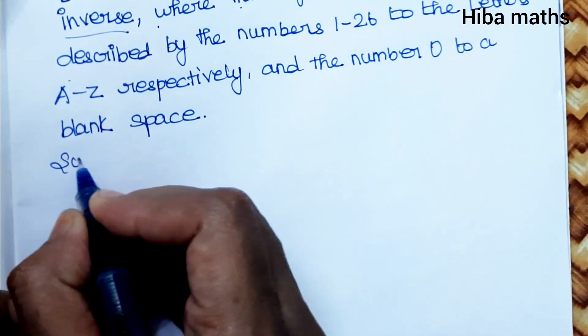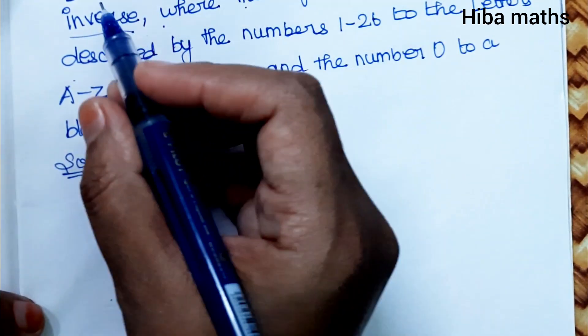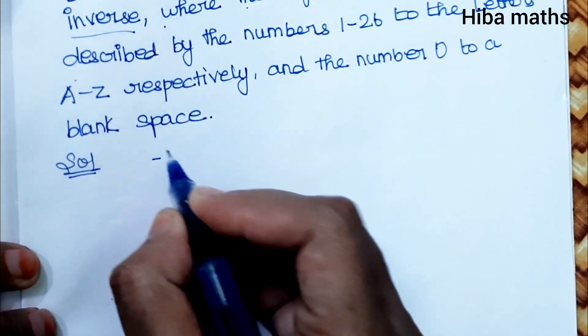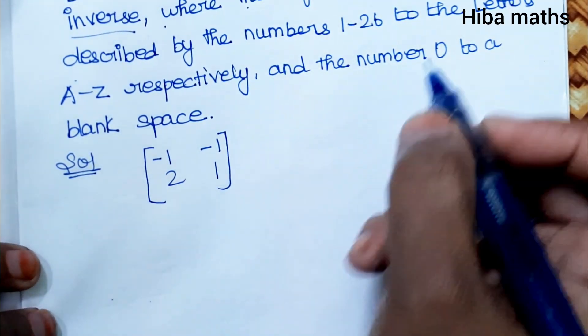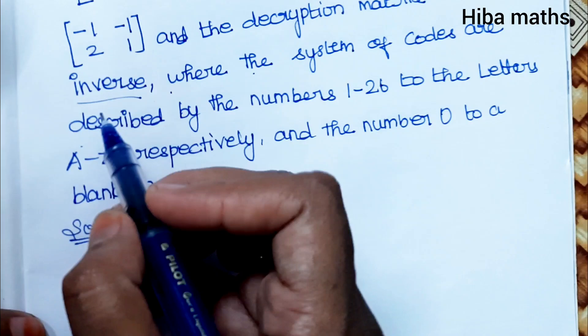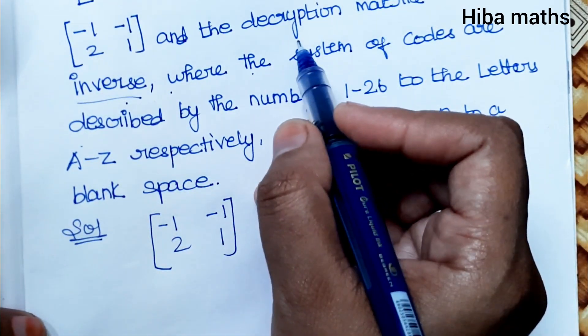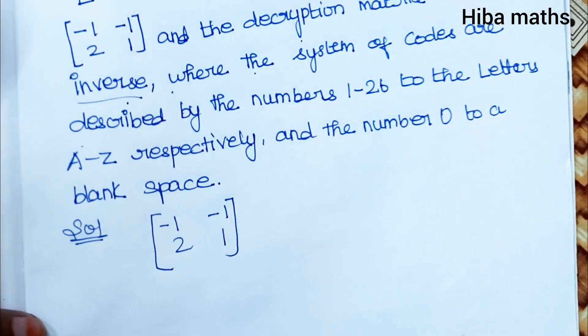To decrypt the message, we can use the encryption matrix [-1, -1; 2, 1]. The decryption matrix will be its inverse.